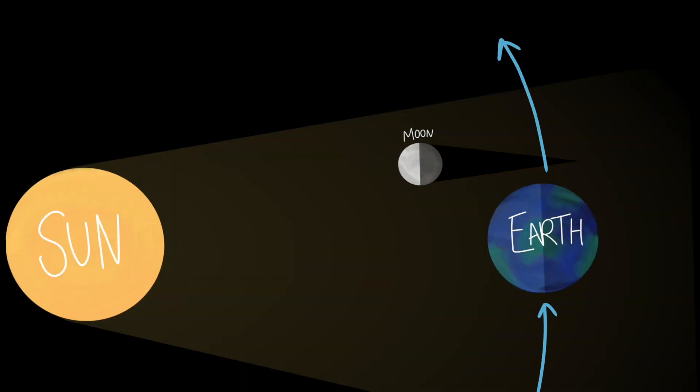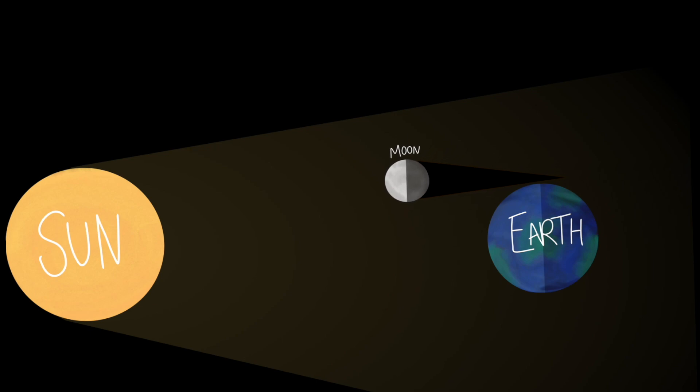As Earth revolves around the sun, the moon revolves around Earth too. Once in a while, the sun, the moon, and Earth all line up so that the moon's shadow falls onto Earth, causing a solar eclipse.